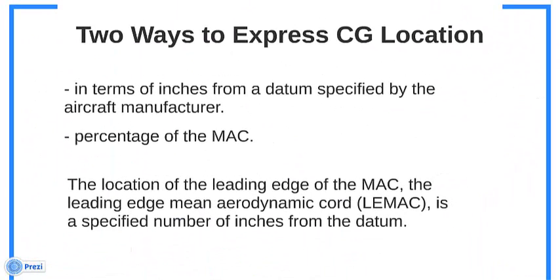Two Ways to Express CG Location. The location of the CG may be expressed in terms of inches from the datum specified by the aircraft manufacturer, or as a percentage of the Mean Aerodynamic Chord (MAC). The leading edge mean aerodynamic chord, or LEMAC, is a specified number of inches from the datum.